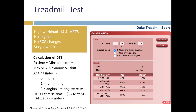The patient underwent treadmill exercise myocardial perfusion imaging. He had a high workload of 14.4 METs, with no angina and no EKG changes — qualitatively considered a very low-risk study. Using the Duke Treadmill score, which incorporates exercise duration, ST segment changes, and presence of angina, the patient's mortality risk was very low. Based solely on treadmill findings, he would have been considered a very low-risk patient.